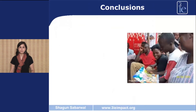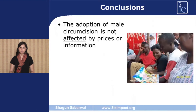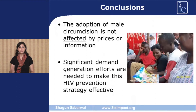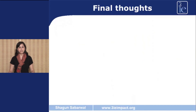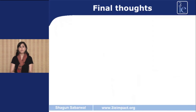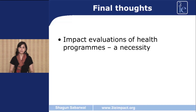So what can we basically conclude from the study? One important conclusion was that the adoption of male circumcision does not vary by price or information, and that these are not enough to change the barriers for getting circumcision done. This is a very important finding because if policy makers are interested in using this as a strategy for preventing HIV, then they have to think of other demand generation activities that would actually make people go and get this procedure done.